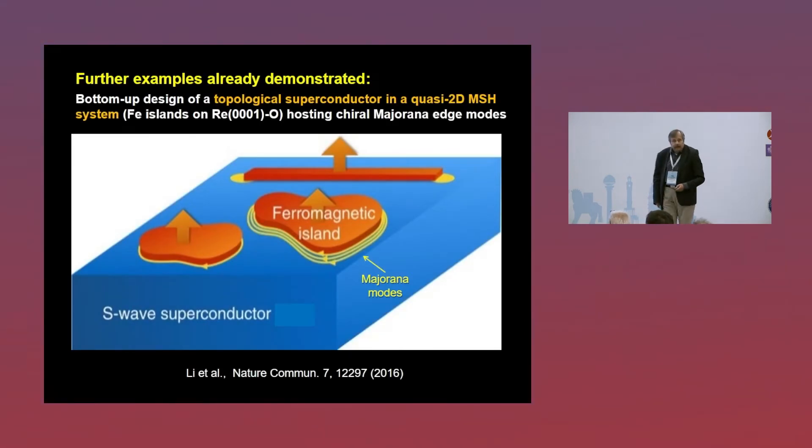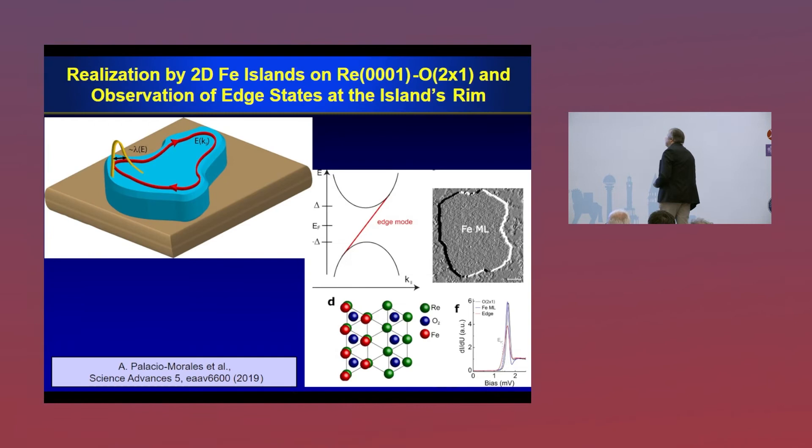But there have been many other nice predictions. And I would quickly like to go through. I have limited time. So, in 2016, six years ago, the Princeton group of Bernevig made a very nice prediction about a topological superconducting state when you bring ferromagnetic islands in contact with an S-wave superconductor. And you expect chiral Majorana edge modes along the periphery of these islands. Again, you can do a bottom-up approach and basically realize such a model-type system, for instance, by iron monolayer islands on a superconducting rhenium substrate.